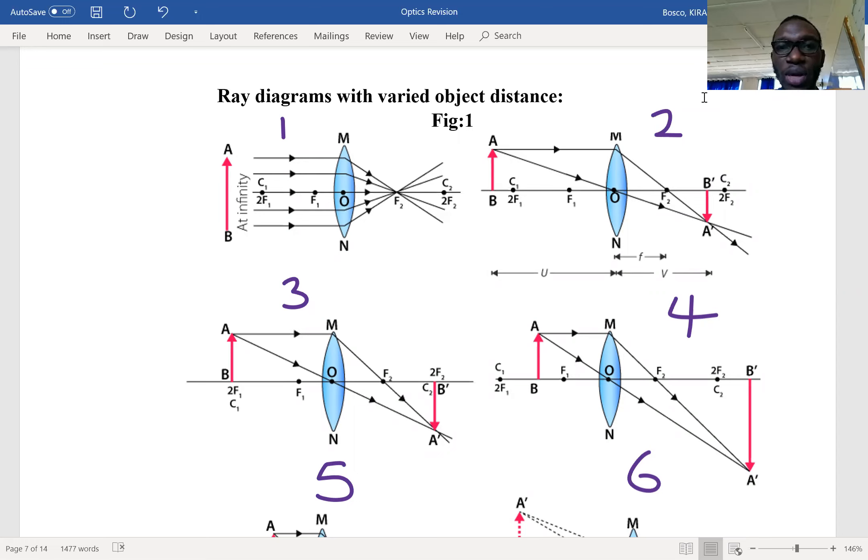The first principle: all rays of light that are parallel and close to the principal axis, after refraction, they converge at the focal point on the opposite side for a converging lens. For a diverging lens, they appear to be coming from the focal point.